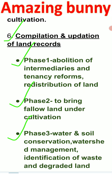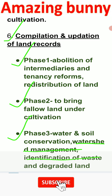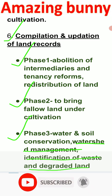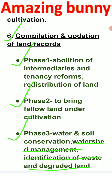Phase three is particularly for soil and water conservation and water management. Land reform also takes care of the quality and texture of water and soil — watershed management, identification of waste and degraded land — to improve land revenue. The aim is to help the farmer increase the economy so that land revenue can be increased. That's all for today.